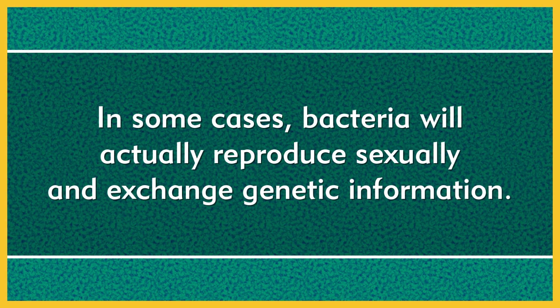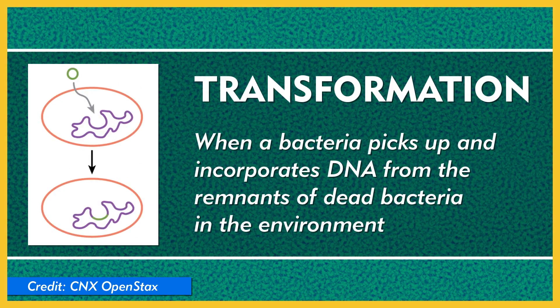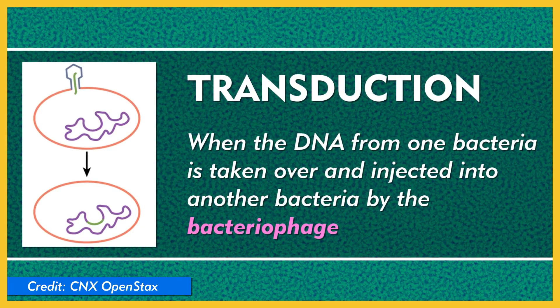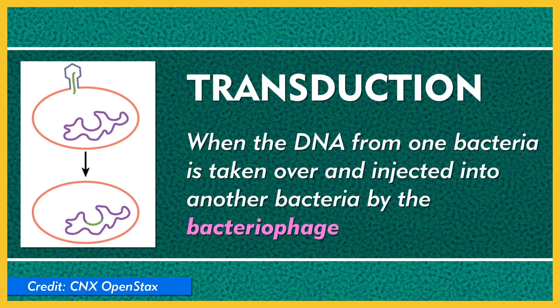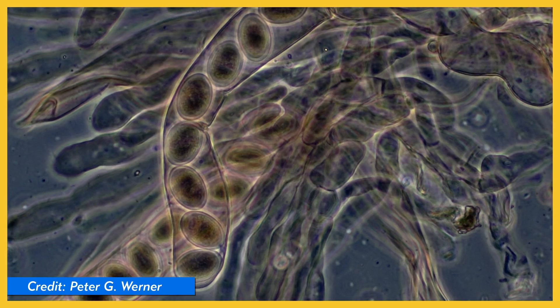Most of the examples we've used here were for animals. But what about the other kingdoms of life? Bacteria will undergo binary fission and budding, which are both types of asexual reproduction. But in some cases, bacteria will actually reproduce sexually and exchange genetic information. This genetic recombination can happen by conjugation, which is when two bacteria join up through a special tube called a pilus, or by transformation, which is when a bacteria picks up and incorporates DNA from the remnants of dead bacteria in the environment. There's even a special process called transduction, which involves a special type of virus called a bacteriophage. In transduction, the DNA from one bacteria is taken over and injected into another bacteria by the bacteriophage. Sort of like a bizarre vaccine version of trading genetic material. Fungi reproduce asexually by budding, fragmentation, and spores, but they can also reproduce sexually when environmental conditions call for it.